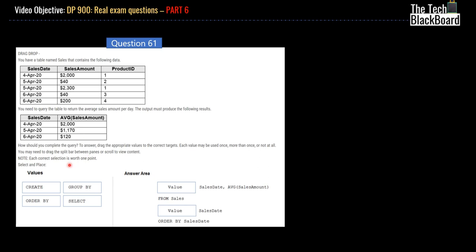So now in the section below, the question is how should you complete the query? To answer, drag the appropriate value to the correct target. Each value may be used once, more than once, or not at all. So let's look at the values that are given. So you see here this is an answer area and this is a half-baked query. So here they have given some part of it and you have to fill in these two boxes. So these are your options: you can either use CREATE, ORDER BY, GROUP BY, or SELECT.